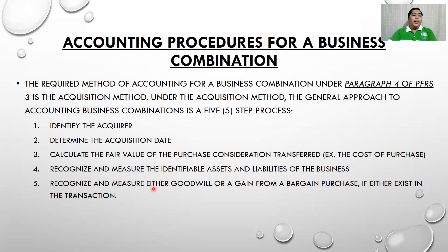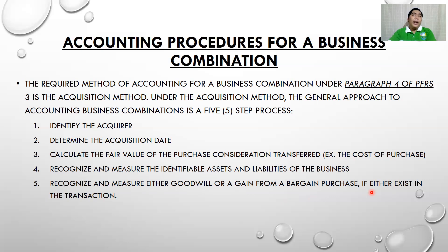The last step is to recognize and measure either goodwill or a gain from a bargain purchase — if either exists in the transaction. This is the common question in board examinations and problems. The problem will ask: how much is the goodwill? If there is no goodwill, is there a gain from a bargain purchase? In a business combination, it is either goodwill or gain from bargain purchase.